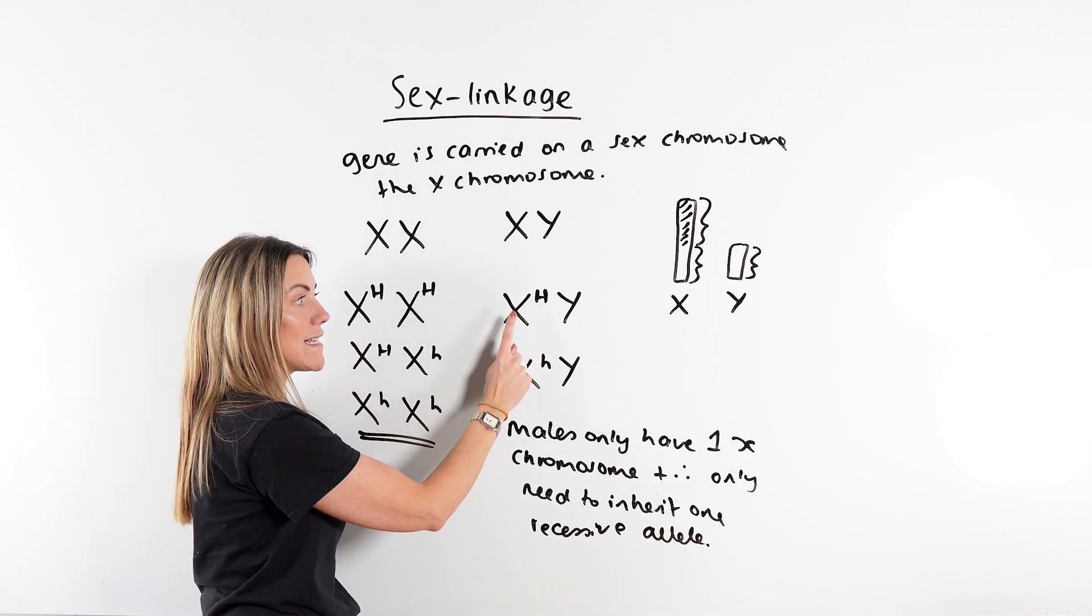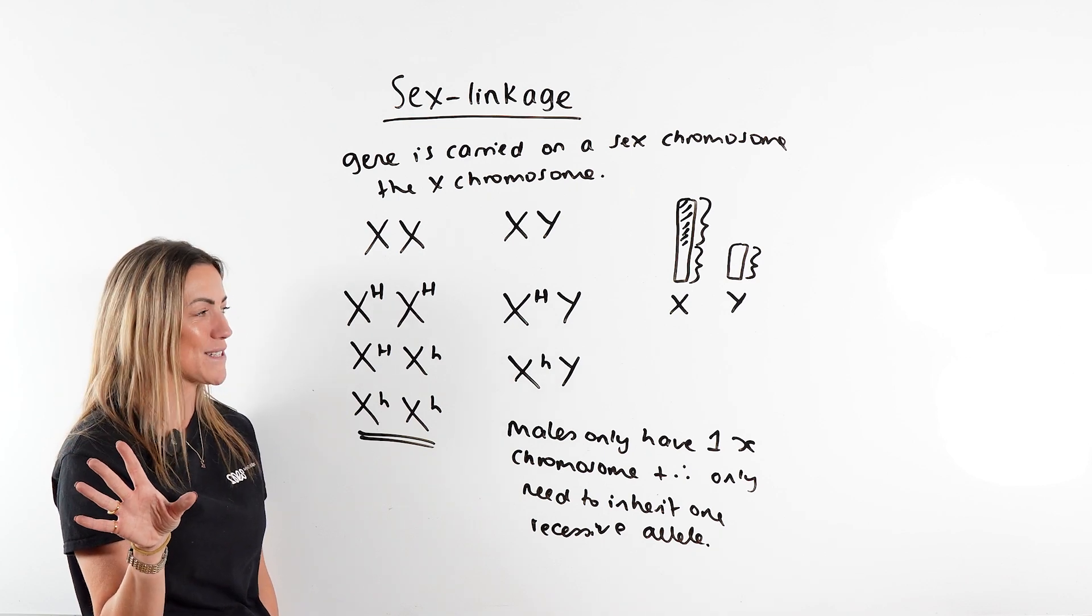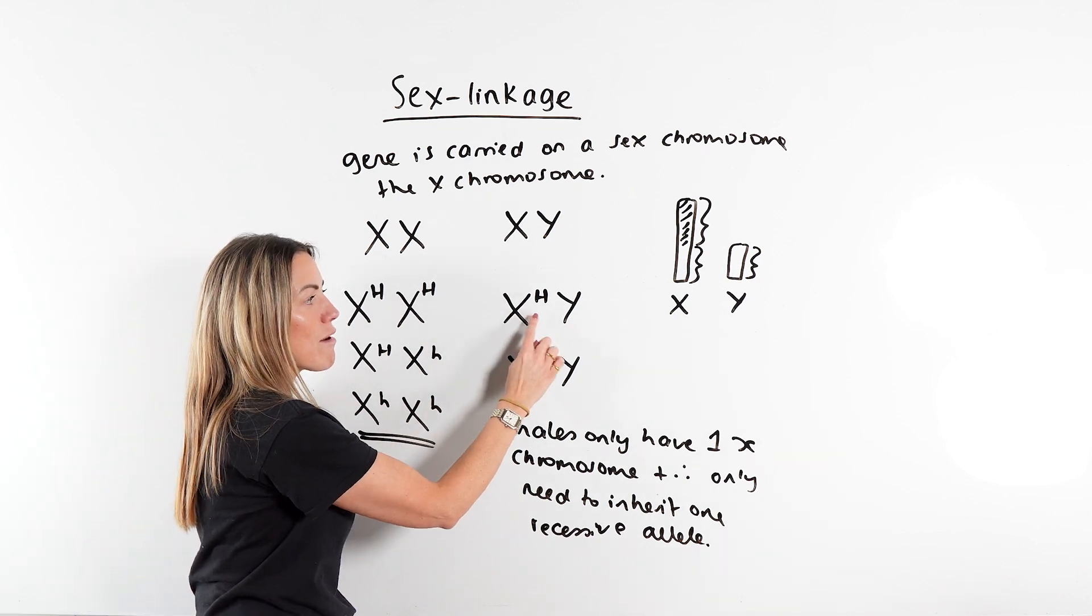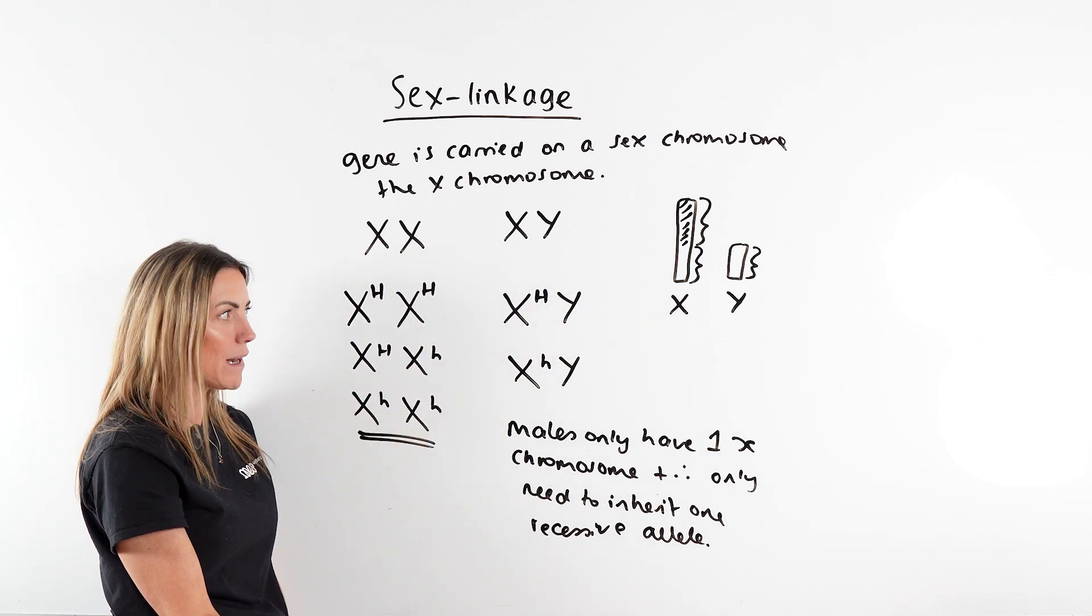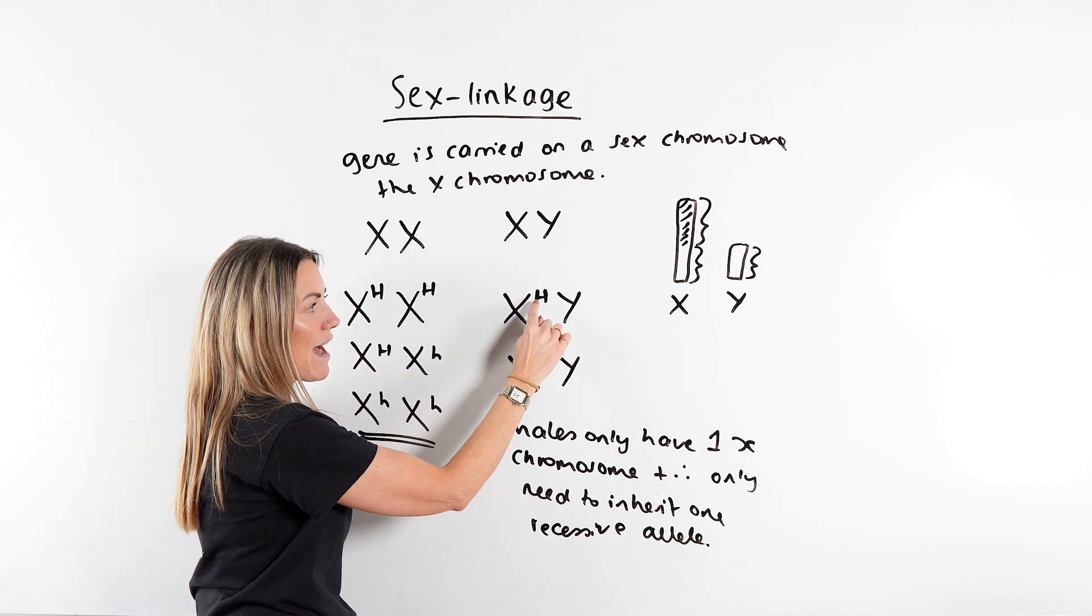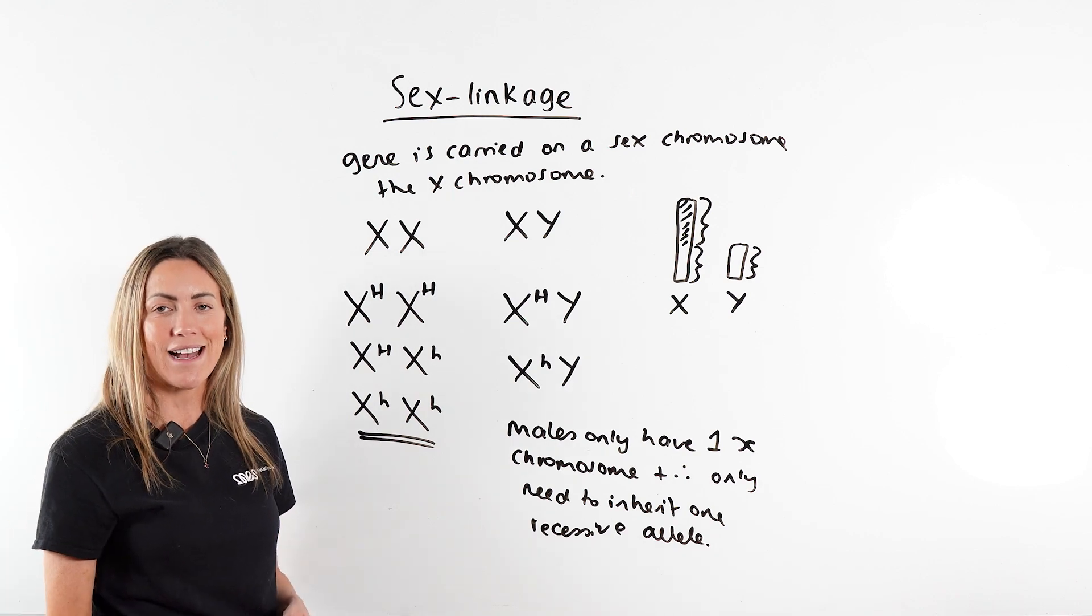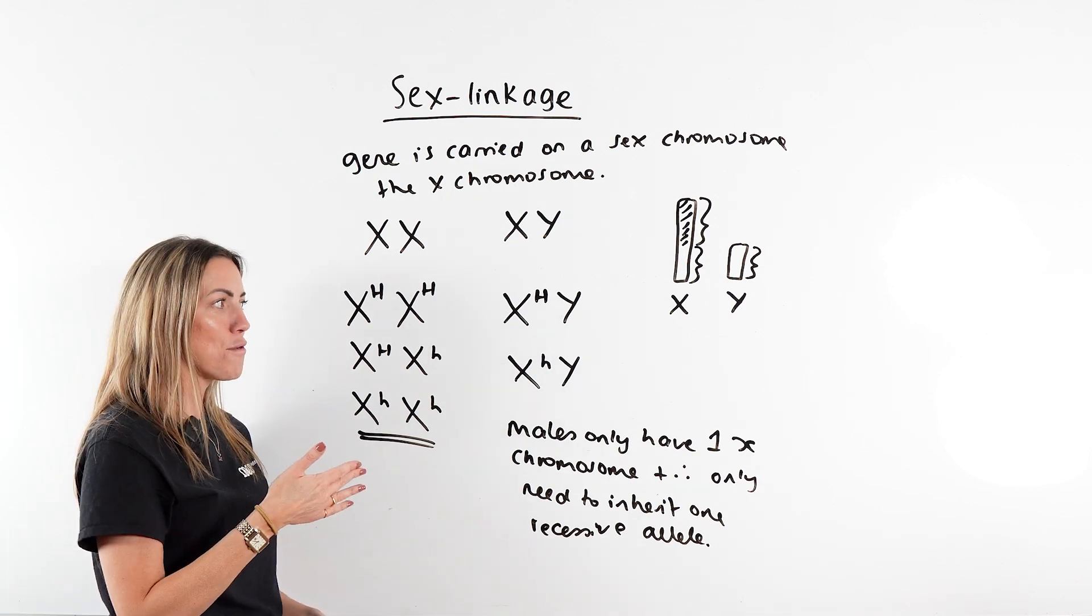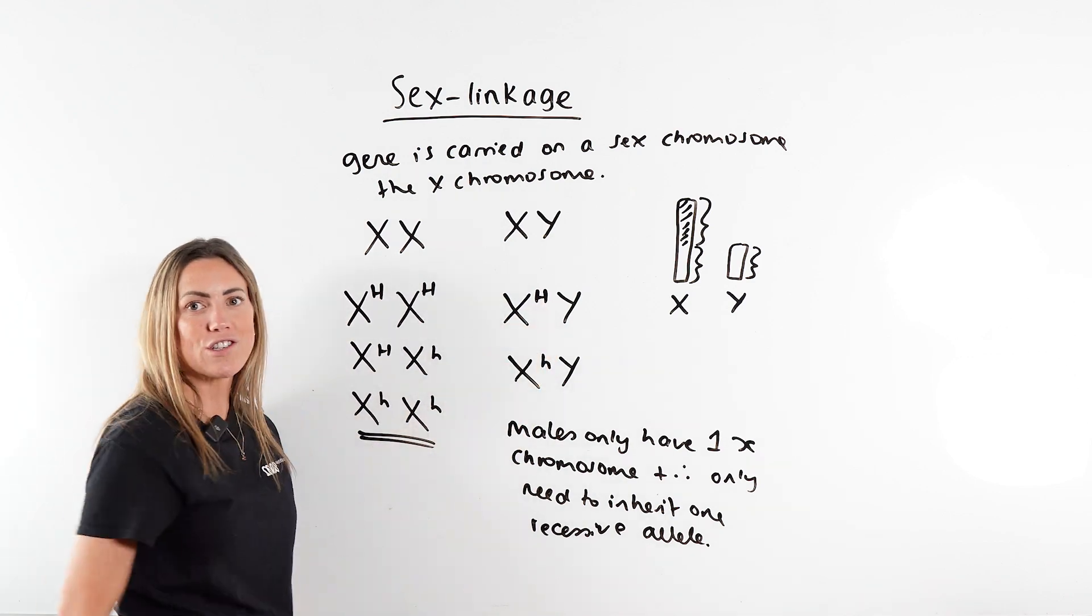Remember, if it's a male, the male is XY, usually, but look out for weird questions where the female is XY. So they're only going to have one allele on the X chromosome. The Y chromosome should be blank. So they're either going to have the dominant or the recessive. They cannot be a carrier. They cannot have both the dominant and the recessive. They're either going to have the disorder or not.